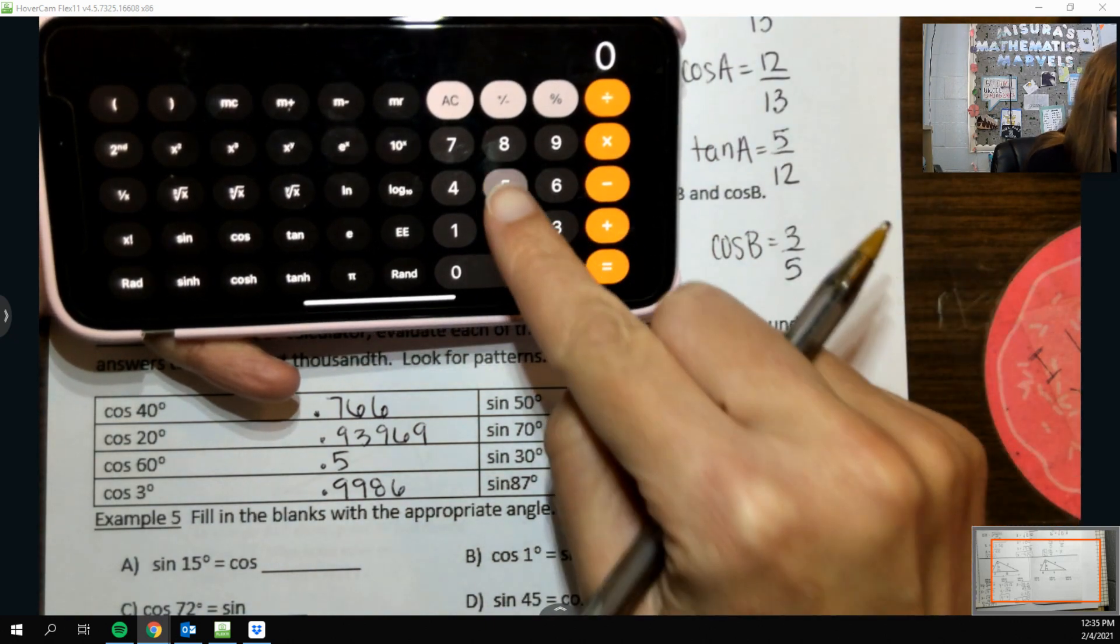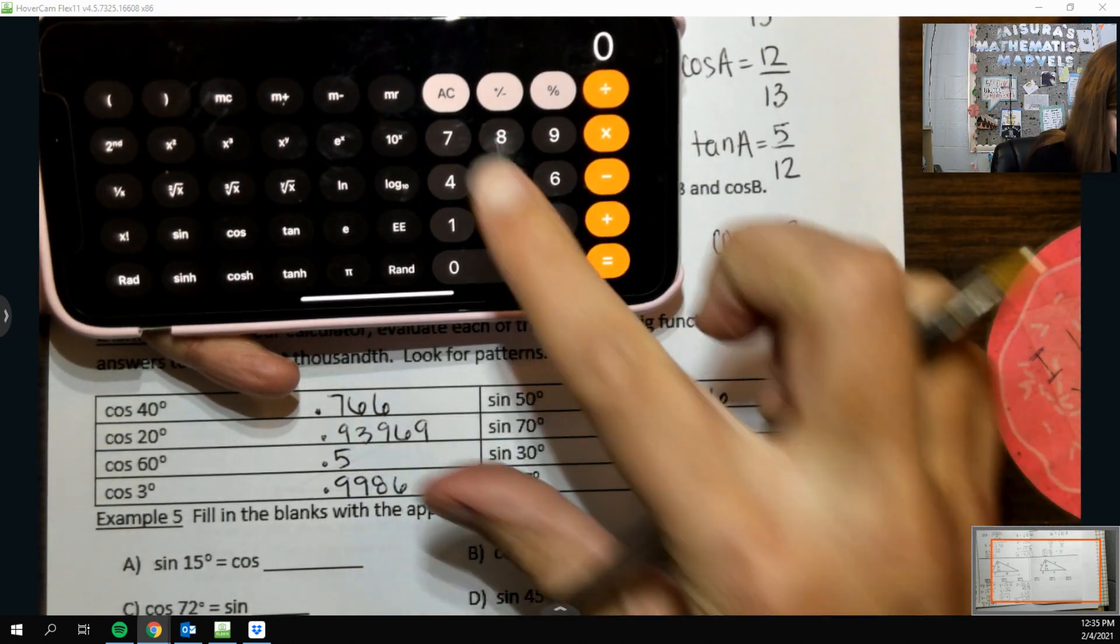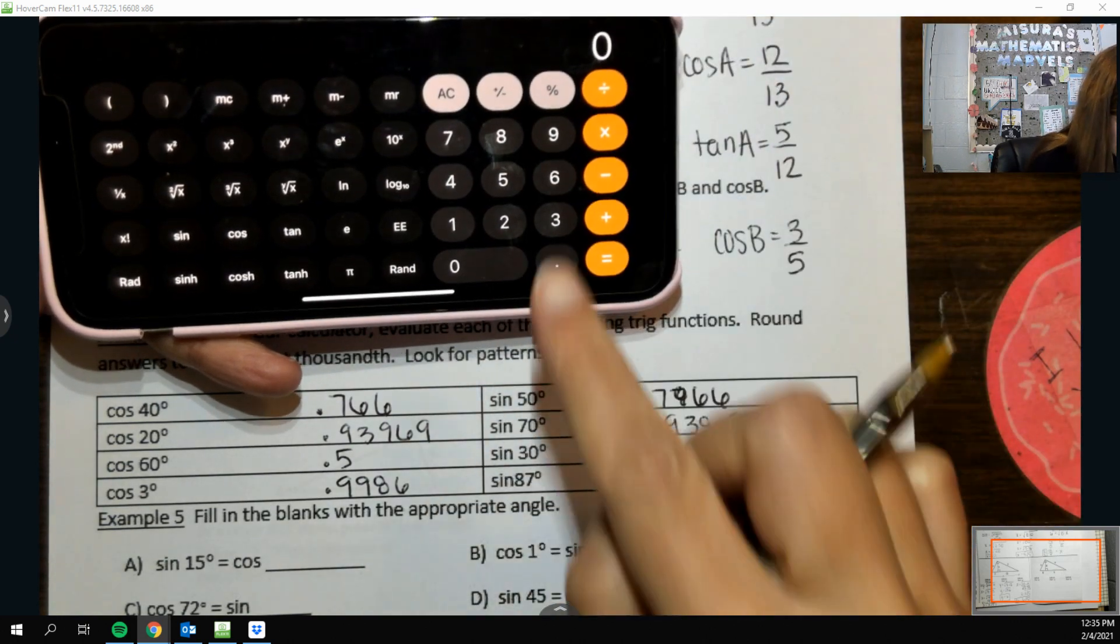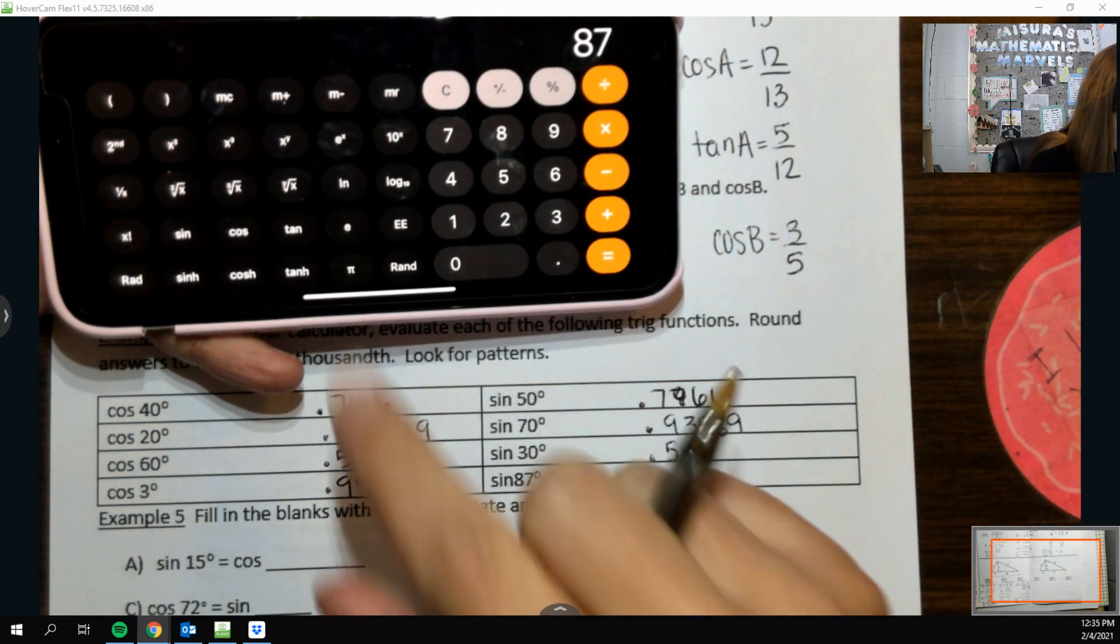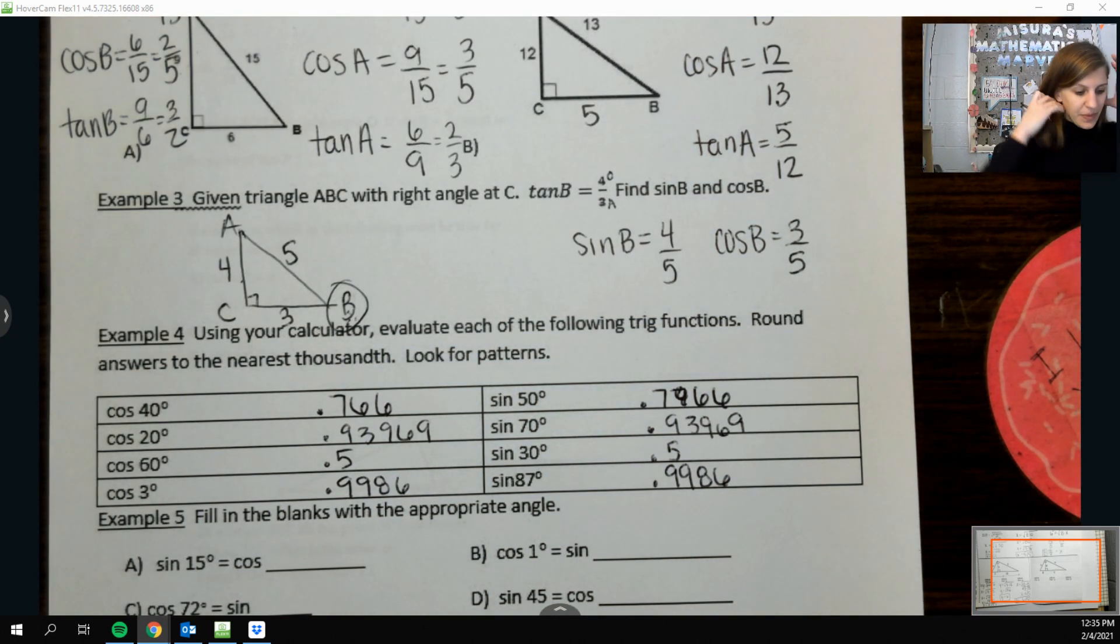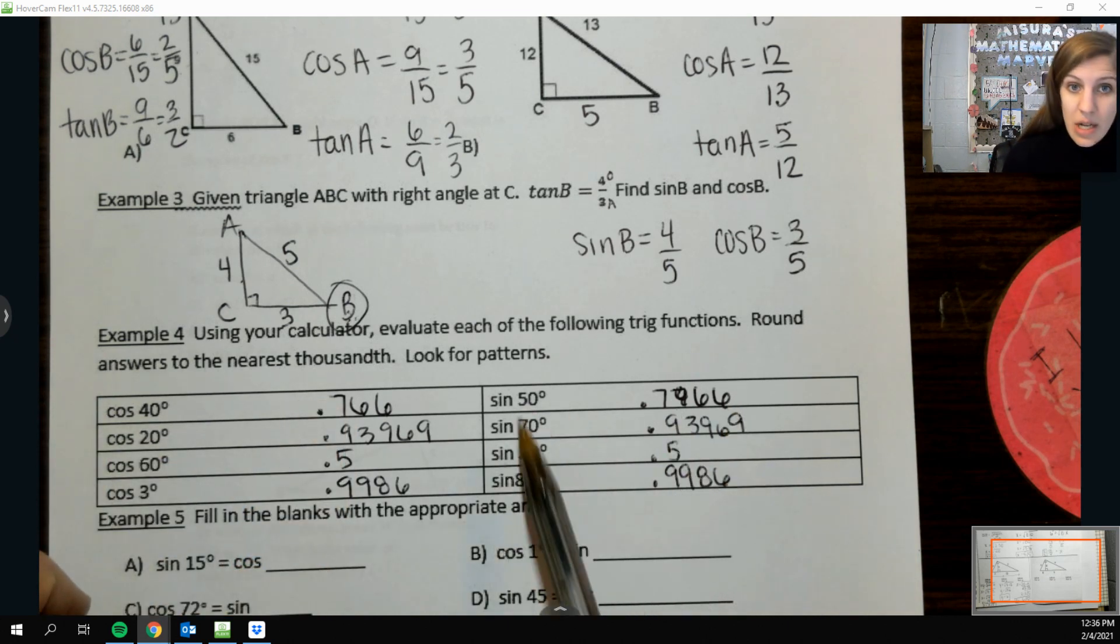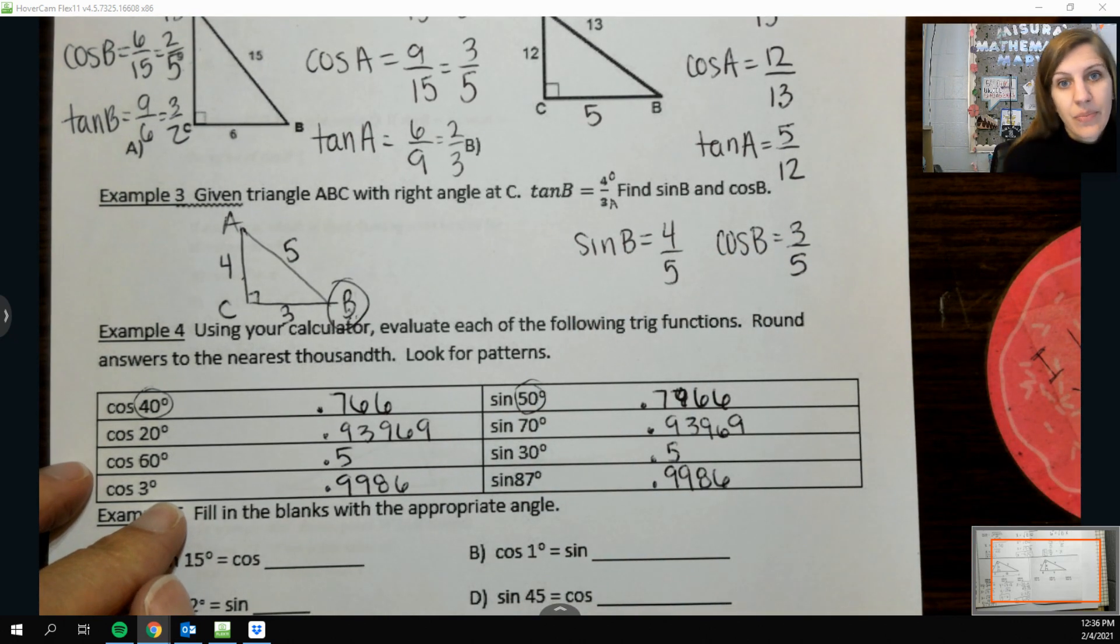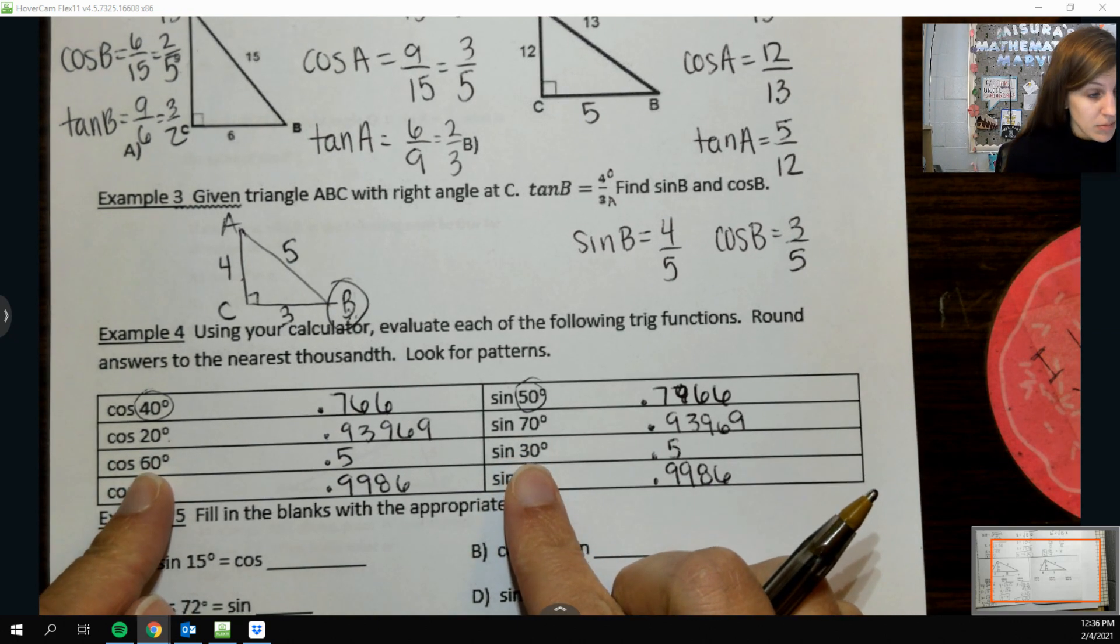Now let's do the sine. So sine 50. 70 sine. Looking for a little pattern. I'm always looking for patterns. Math is all about patterns. 30 sine. Oh, that's another one of those nice ones. 87 sine. So I don't know if y'all are noticing or not, but these answers are the same. These are all cosines. Those are all sines. And so the interesting thing here to notice is that those two add up to 90, these two add up to 90, those two add up to 90, and add up to 90.